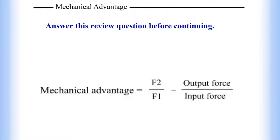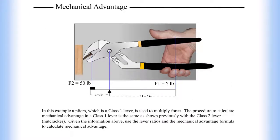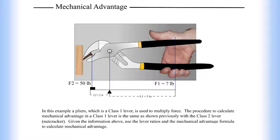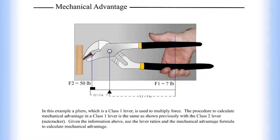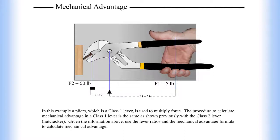Let's do a quick review before we move on. Mechanical advantage equals F2 divided by F1, which equals the output force divided by the input force. In this example, a pliers, which is a class 1 lever, is used to multiply force. The procedure to calculate mechanical advantage in a class 1 lever is the same as shown previously with the class 2 lever.